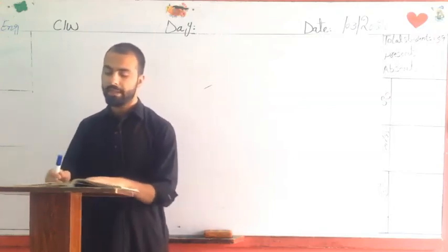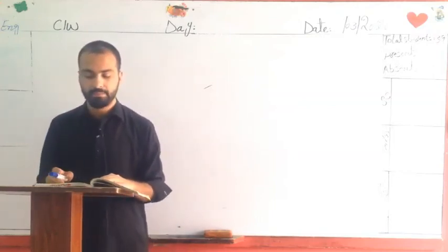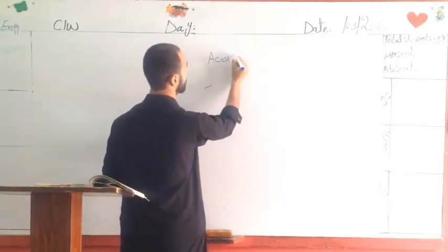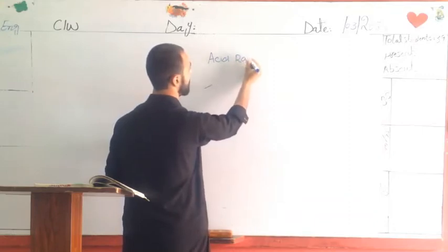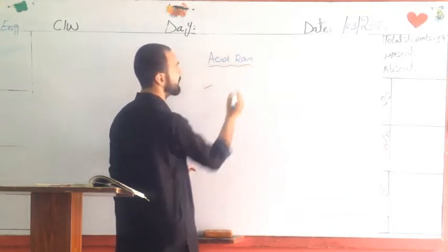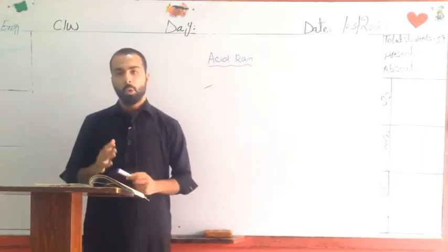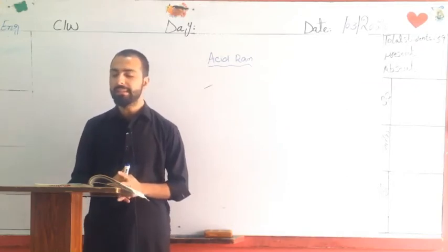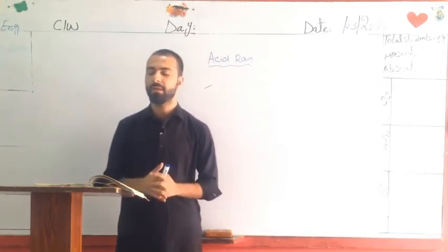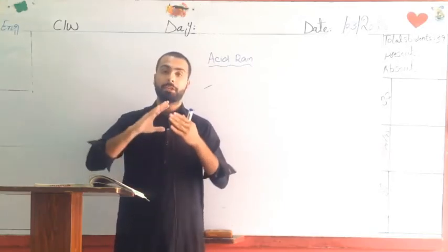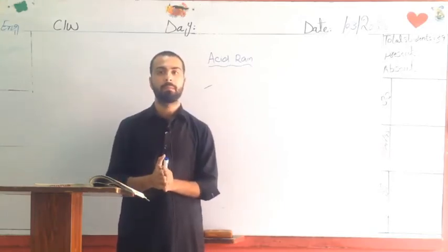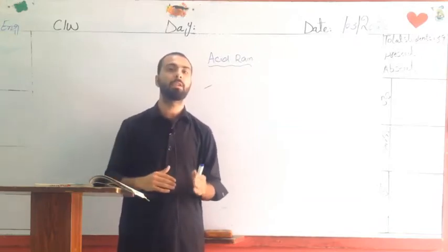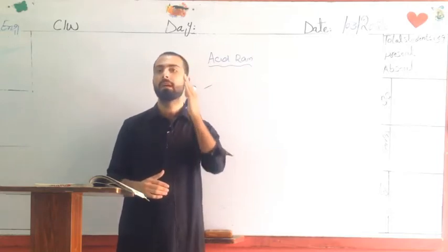Our new topic is acid rain, page 46. What is acid rain? Tezabi Barish. When the quantity of acids increase in the atmosphere it leads to acid rain during rainfall. جب atmosphere میں acids زیادہ ہو جائے تو جب بارش برستی ہے تو اس کو ہم کیا کہیں گے acid rain.